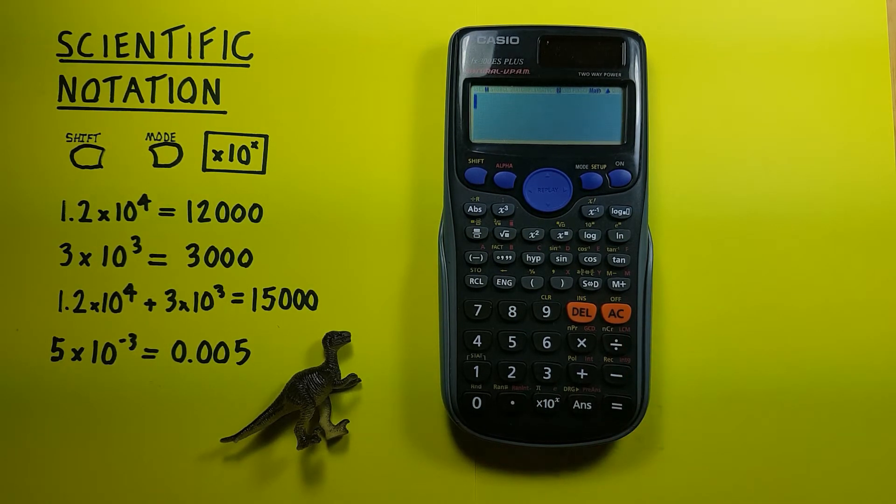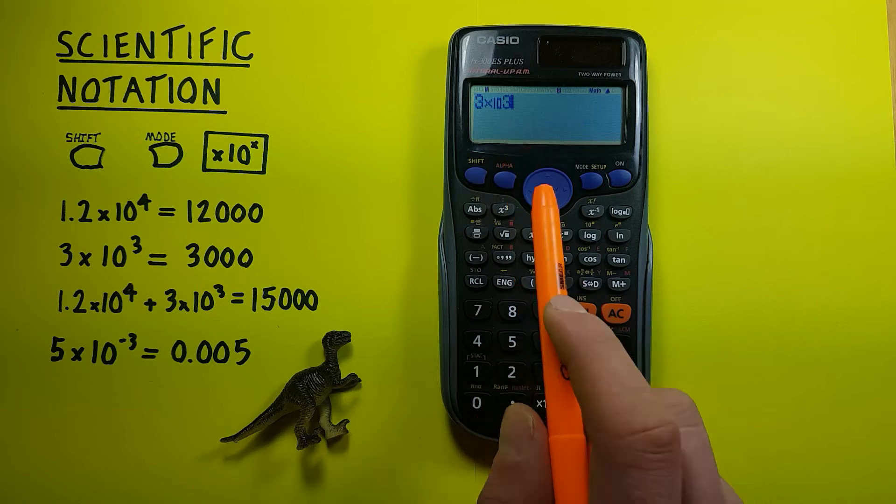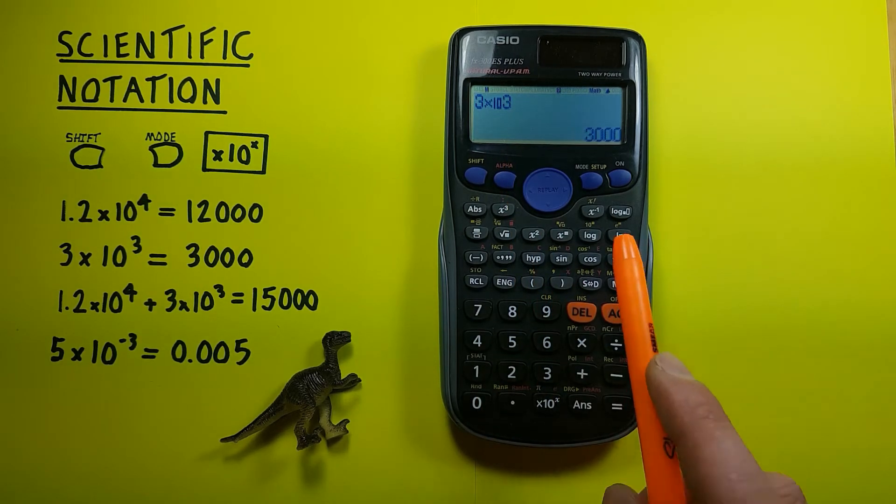Another example would be 3 times 10 to the third power. So we press again 3 times 10 to the third power. There we go, 3 times 10 to the power of 3 equals 3000.